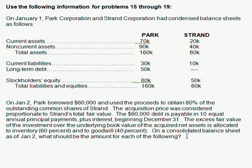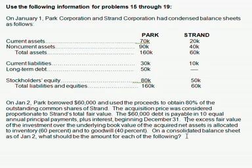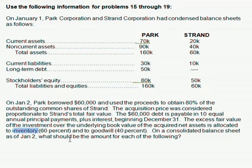The fourth sentence reads: The excess fair value of the investment over the underlying book value of the acquired net assets is allocated to inventory 60% and to goodwill 40%. That sentence is basically talking about later on when we find the excess value — everything we did in Chapters 2 and 3, that basic thing where we find excess. It's telling us which accounts we apply the excess to, because it's not all going to goodwill; we're sending some to inventory proportionately.